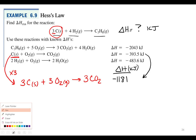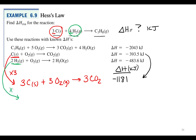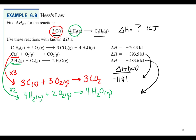Now we need 4 moles of hydrogen as a reactant. Hydrogen appears in the third equation, but there are only 2 moles of H₂, so we multiply that equation by 2. That gives 4 moles of H₂ plus 2 moles of O₂ produces 4 moles of water, which gives us the 4 moles of hydrogen we need. The enthalpy for that equation was −483.6 kJ, and multiplying by 2 gives −967.2 kJ.